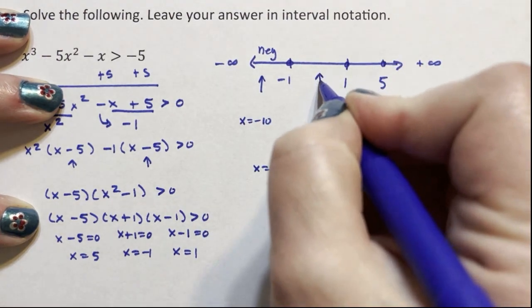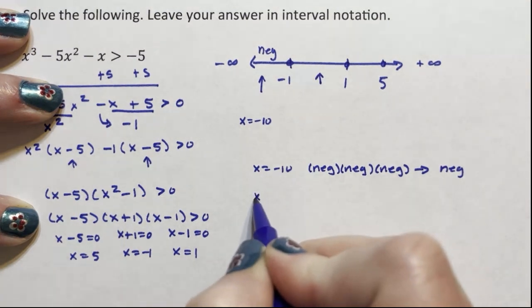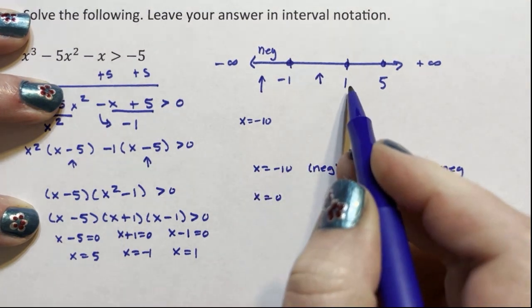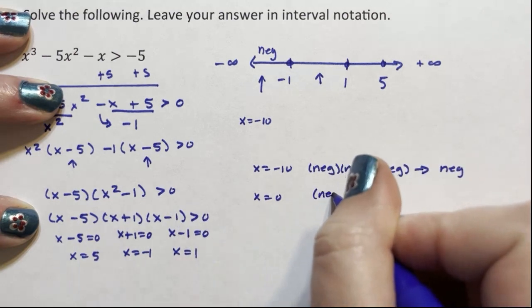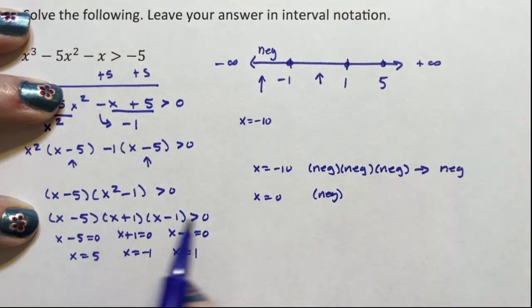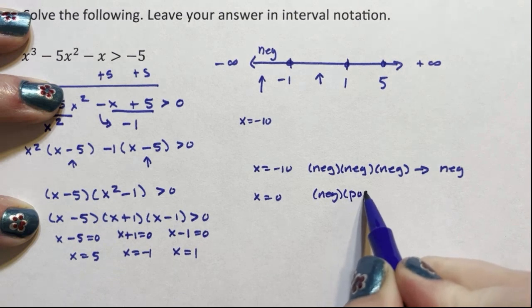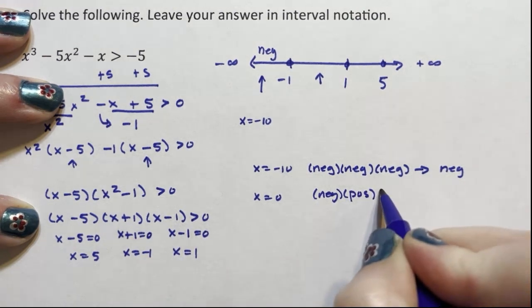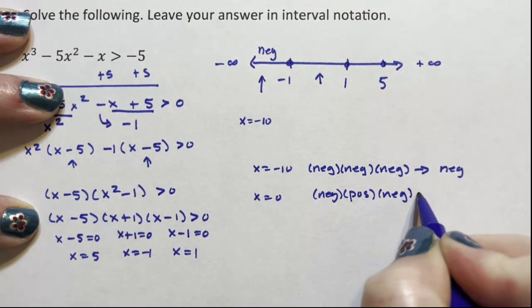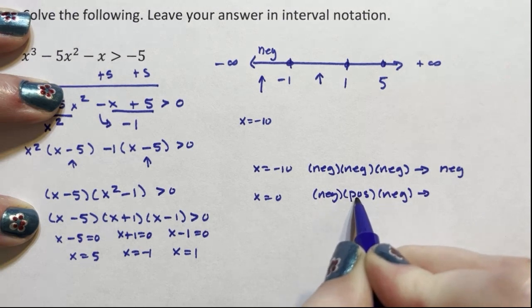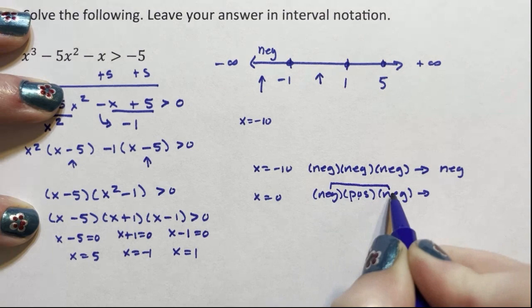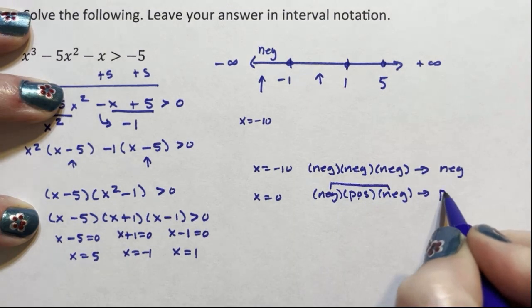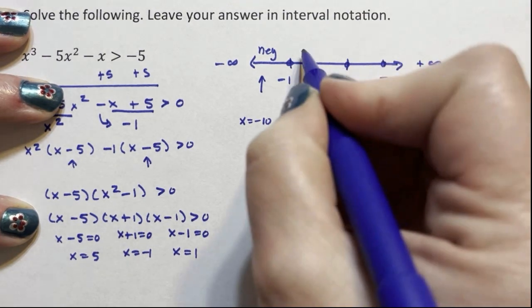I'm going to choose something in here. I'm going to choose x equals 0. I like 0, it's simple. 0 minus 5 is negative. 0 plus 1 is positive. 0 minus 1 is negative. Negative times a positive is negative. Negative times a negative is negative. So these two become positive and that one will stay positive. All in all, this is going to be positive.